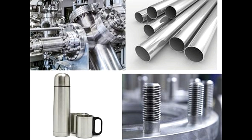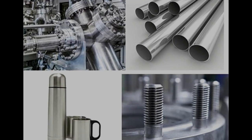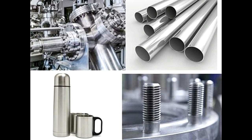Ferritic stainless steel contains chromium and trace amounts of carbon. The molecular structure resembles that of low carbon steel. It is not tough or hard, hence its applications are limited. It is characterized by its magnetic nature and by the ability to resist cracking in the presence of stress and corrosion. Austenitic stainless steel is the most common type. It shows presence of nickel, manganese, and nitrogen, which impart the alloy with the ability to be welded and formed into any desired shape. It is however susceptible to stress corrosion cracking.